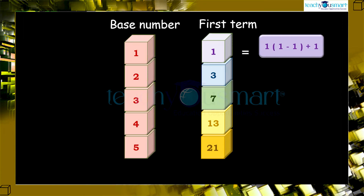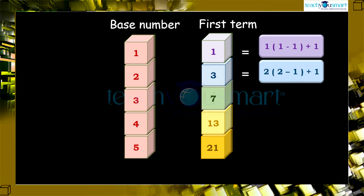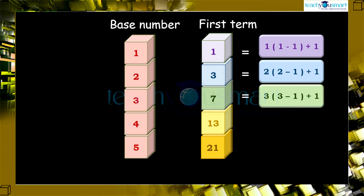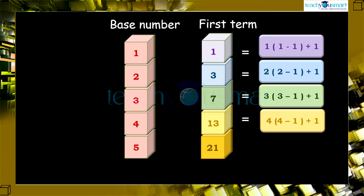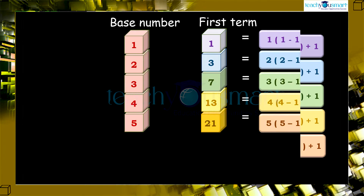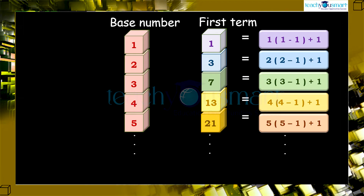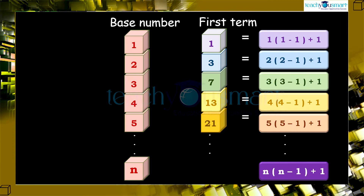1 equals 1 multiplied by (1 minus 1) plus 1. 3 equals 2 multiplied by (2 minus 1) plus 1. 7 equals 3 multiplied by (3 minus 1) plus 1. 13 equals 4 multiplied by (4 minus 1) plus 1. 21 equals 5 multiplied by (5 minus 1) plus 1. By observing these patterns, can you find the first term when the base number is n? Yes, it will be n multiplied by (n minus 1) plus 1.